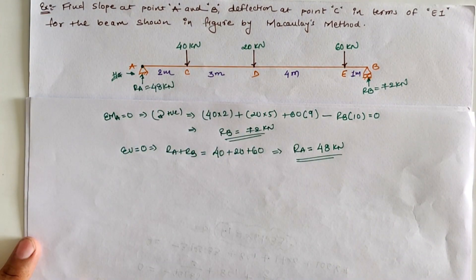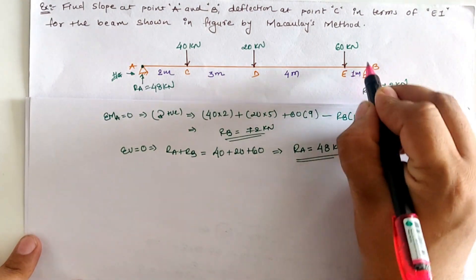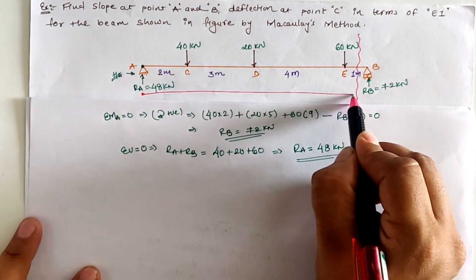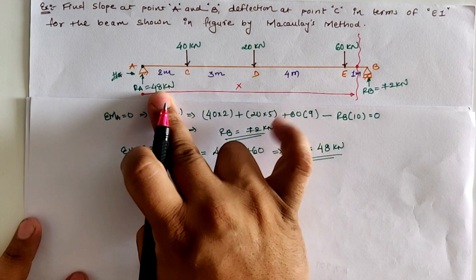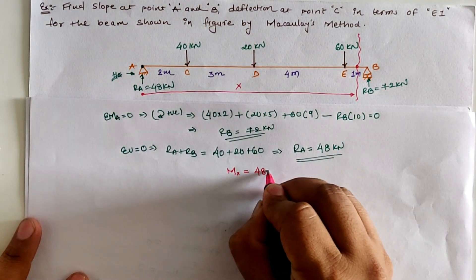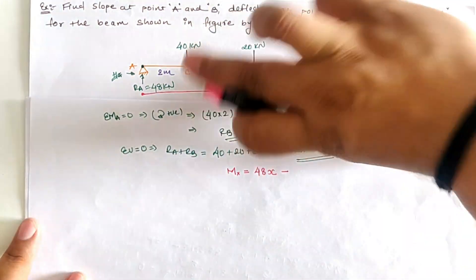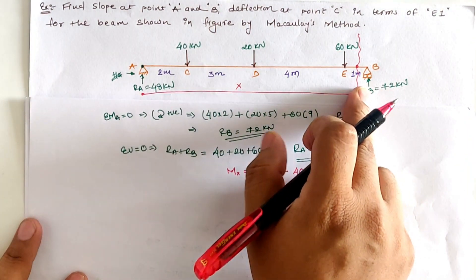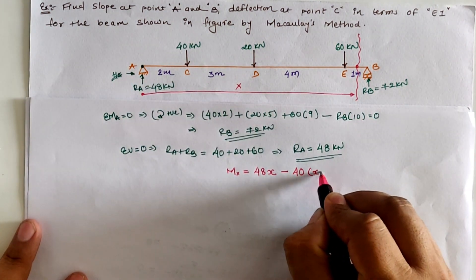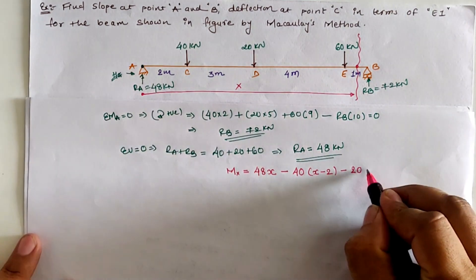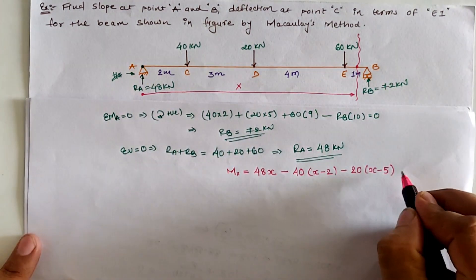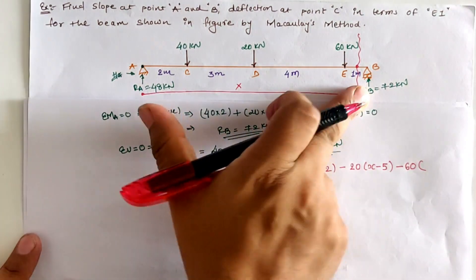Second, we have to assume a section from the left and the section must be at the last span. We take a section between A and B with origin at location A and sectional distance as x. Taking the moment at this location Mx: RA into x is 48x clockwise; 40 kN creates anti-clockwise moment at distance (x − 2); 20 kN load is anti-clockwise at distance (x − 5); and 60 kN also creates anti-clockwise moment at distance (x − 9).